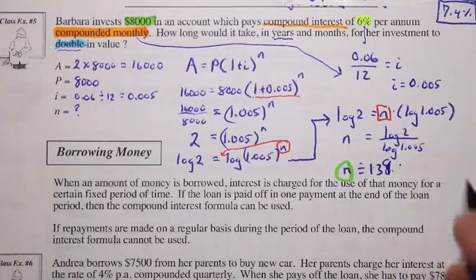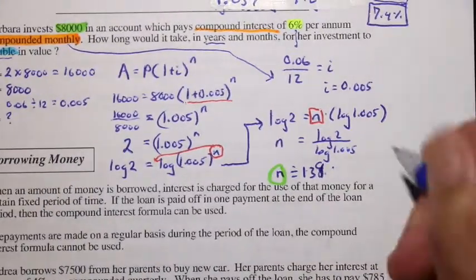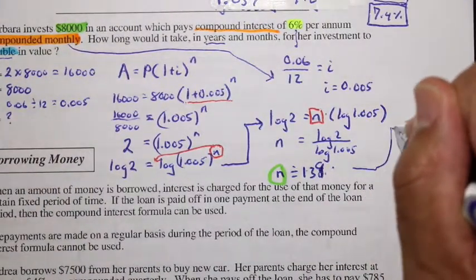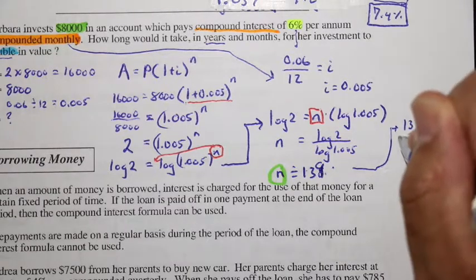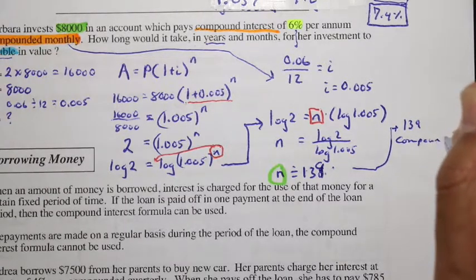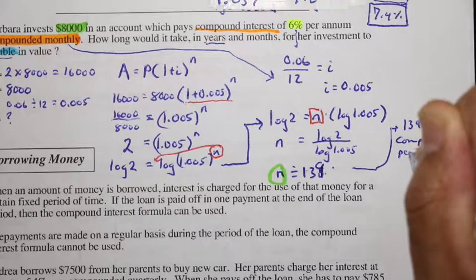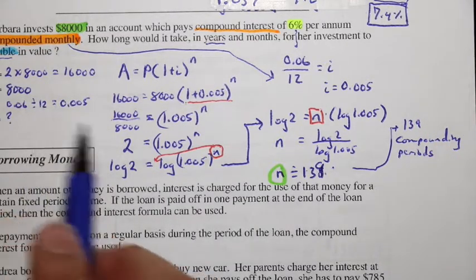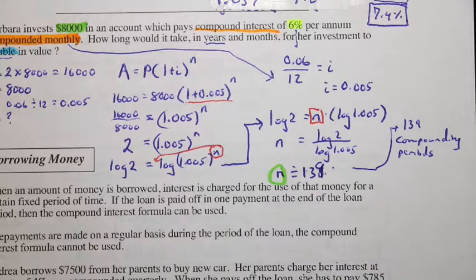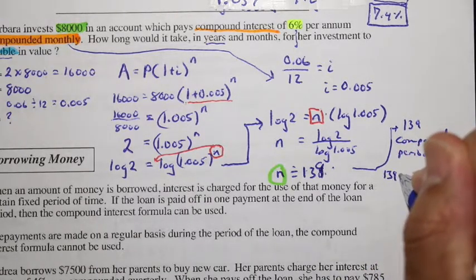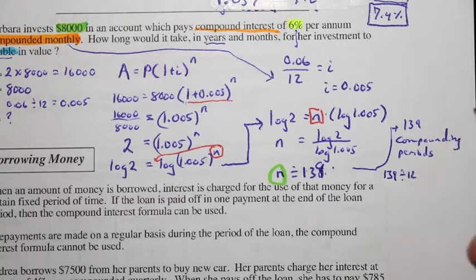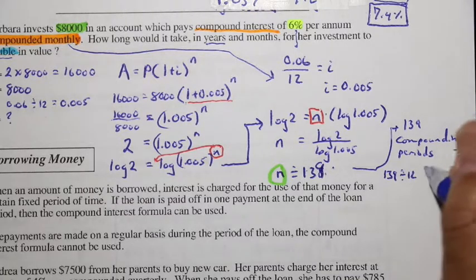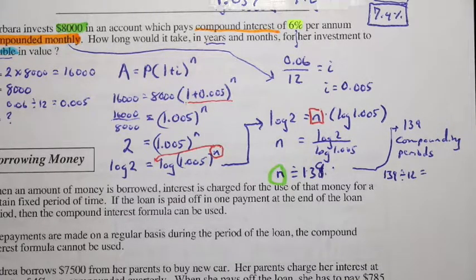So this is 139 compounding periods. So here, let me just put this here, 139 compounding periods. And what is the compounding periods? It's 12 per year. So if we take 139 and divide by 12, we'll know the number of years. So 139 divided by 12.